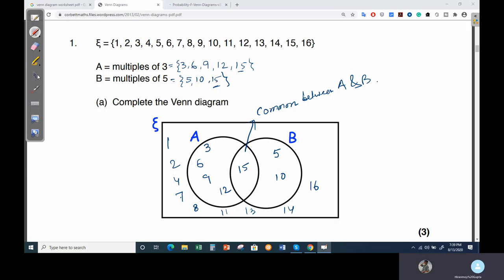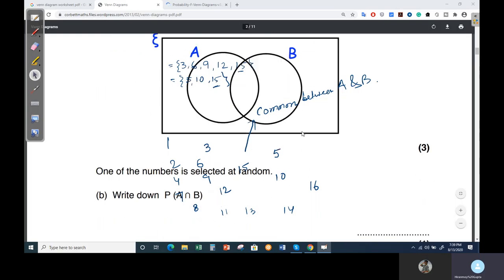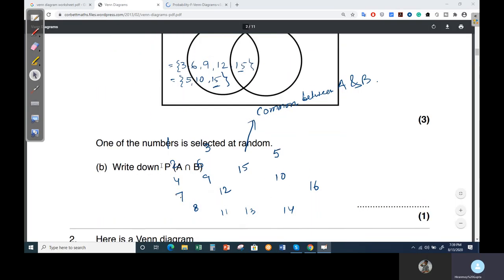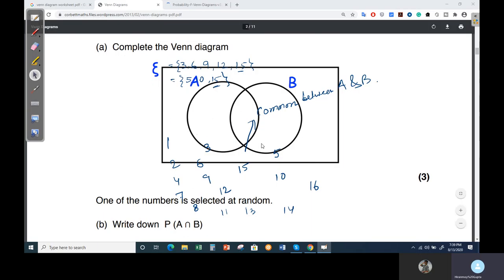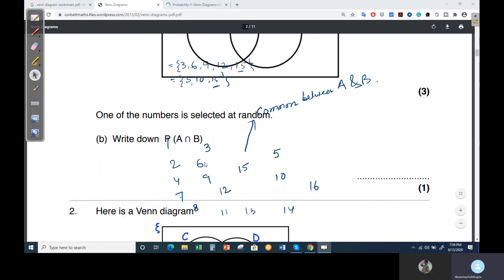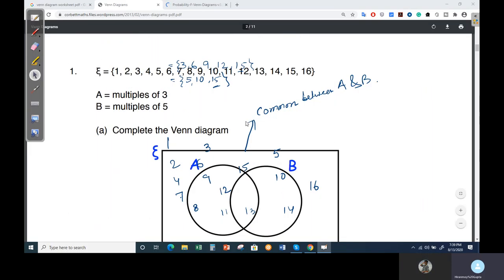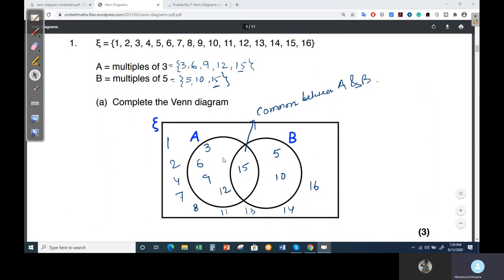After the distribution, you have to check the next question. The next question is talking about: now one of the numbers is selected at random. So first, complete the Venn diagram we have completed. Then write down P(A ∩ B).